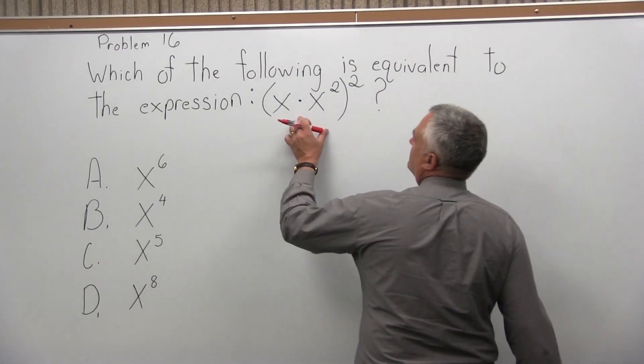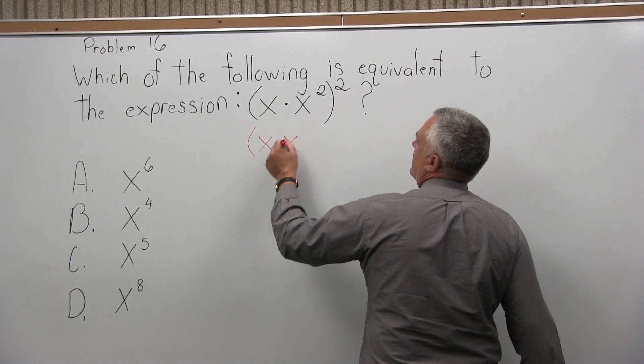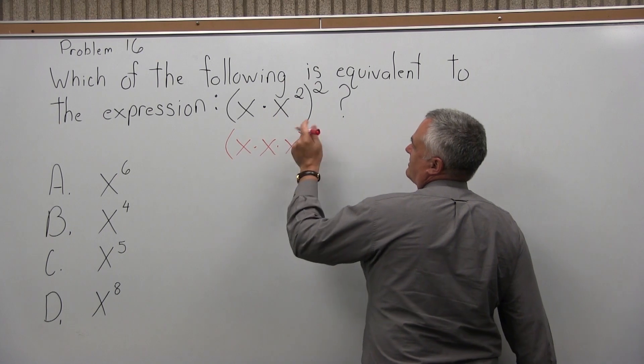So basically, let's simplify what's in the parentheses a little bit. So x times x squared is x times xx. The x to the second, it's two x's times each other,